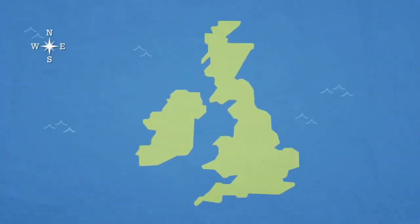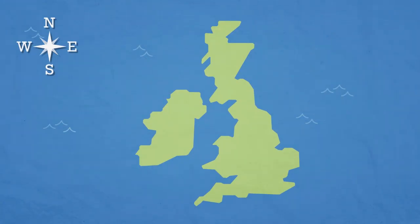Air blowing towards the UK can come from any direction on the compass, and each direction brings a special kind of weather.